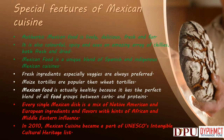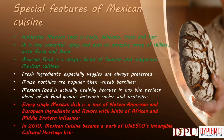Special Features of Mexican Cuisine: Authentic Mexican food is lively, delicious, fresh and fun. It is also colorful, spicy and uses an amazing array of chilis, both fresh and dried. Mexican food is a unique blend of Spanish and indigenous Mexican cuisines. Fresh ingredients, especially veggies, are always preferred. Maize tortillas are more popular than wheat tortillas. Mexican food is actually healthy because it has the perfect blend of all food groups — carbs and proteins. Every single Mexican dish is a mix of Native American and European ingredients and flavors with hints of African and Middle Eastern influence. In 2010, Mexican cuisine became a part of UNESCO's Intangible Cultural Heritage List.